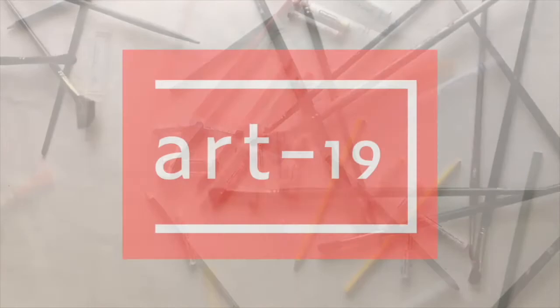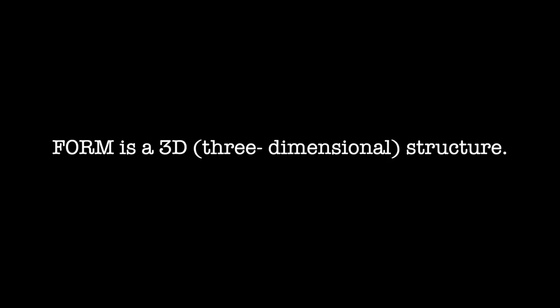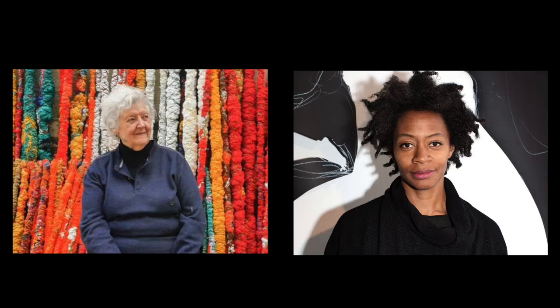Shape is a two-dimensional formation of connecting lines, such as a square, circle, or triangle. Form is a three-dimensional structure like a cube, sphere, or pyramid. Both form and shape can be geometric or organic.